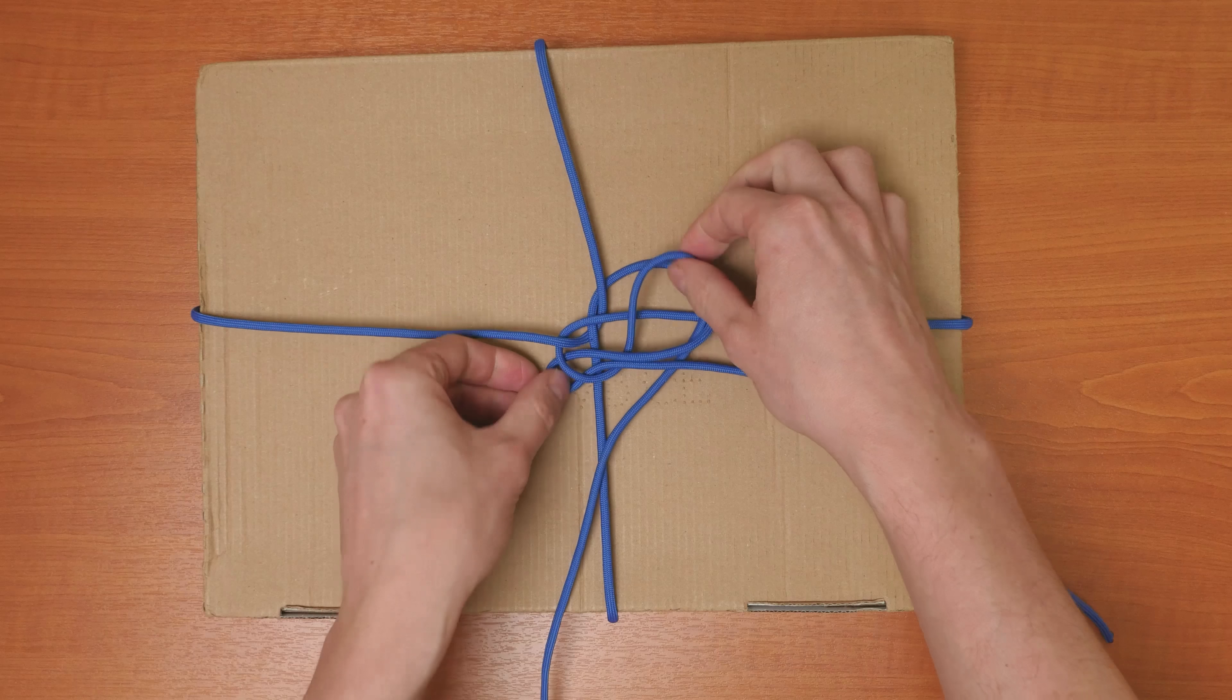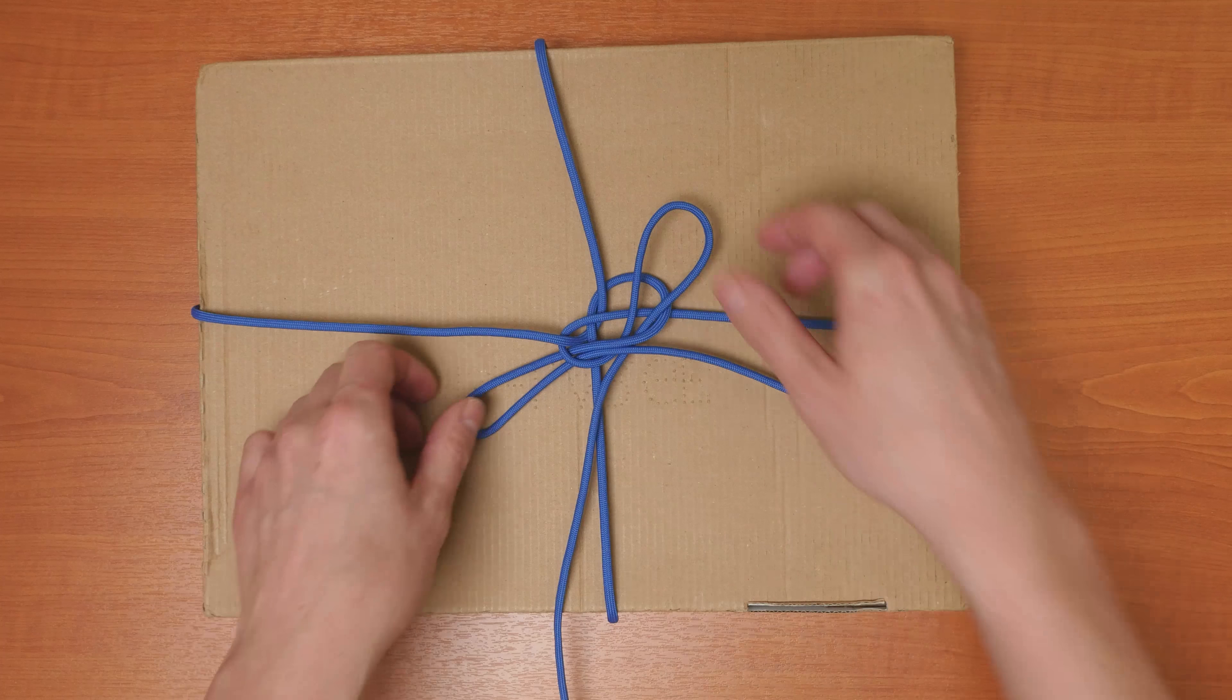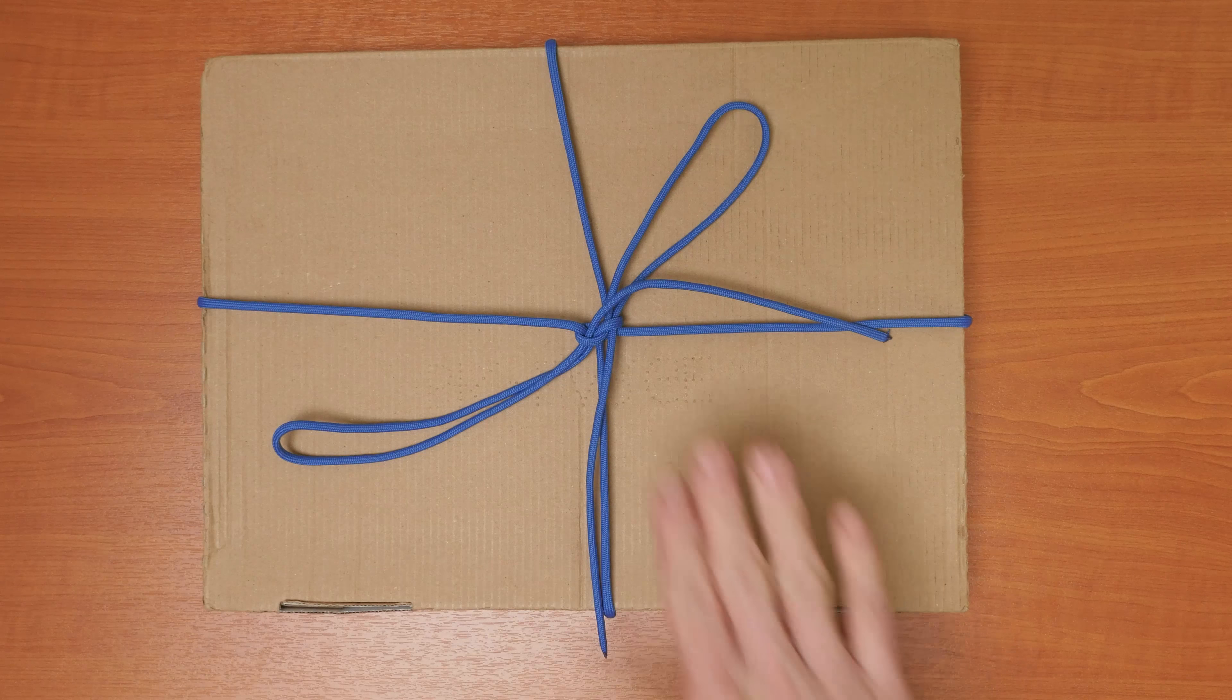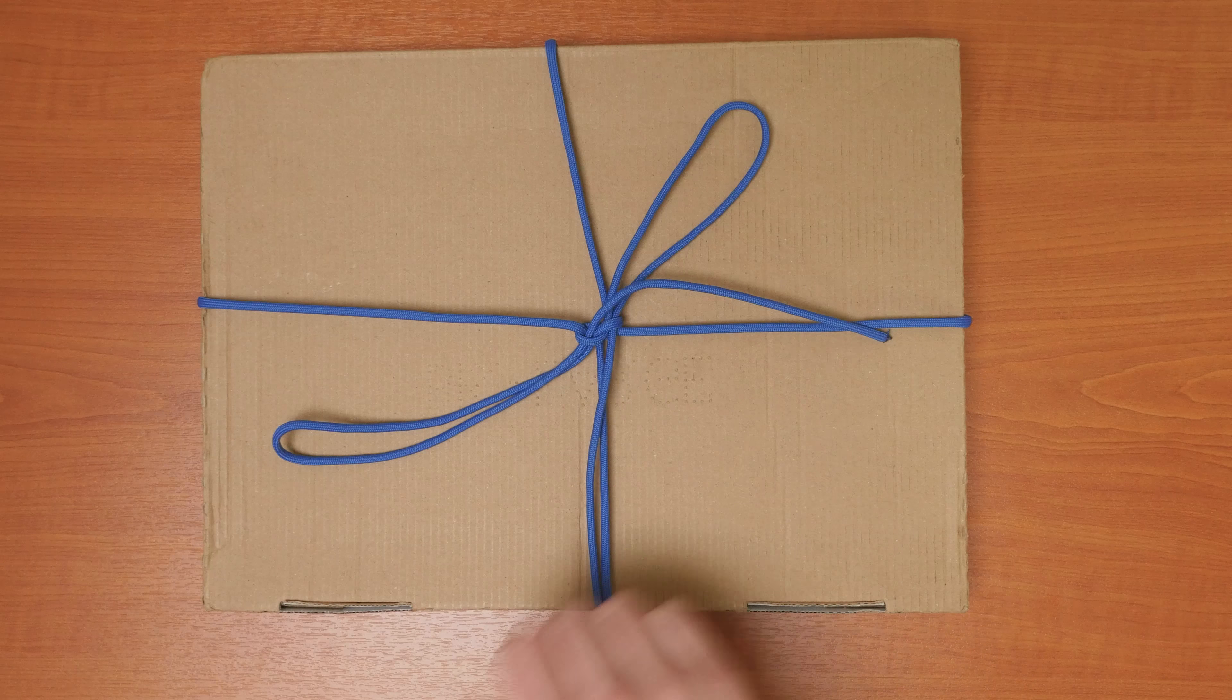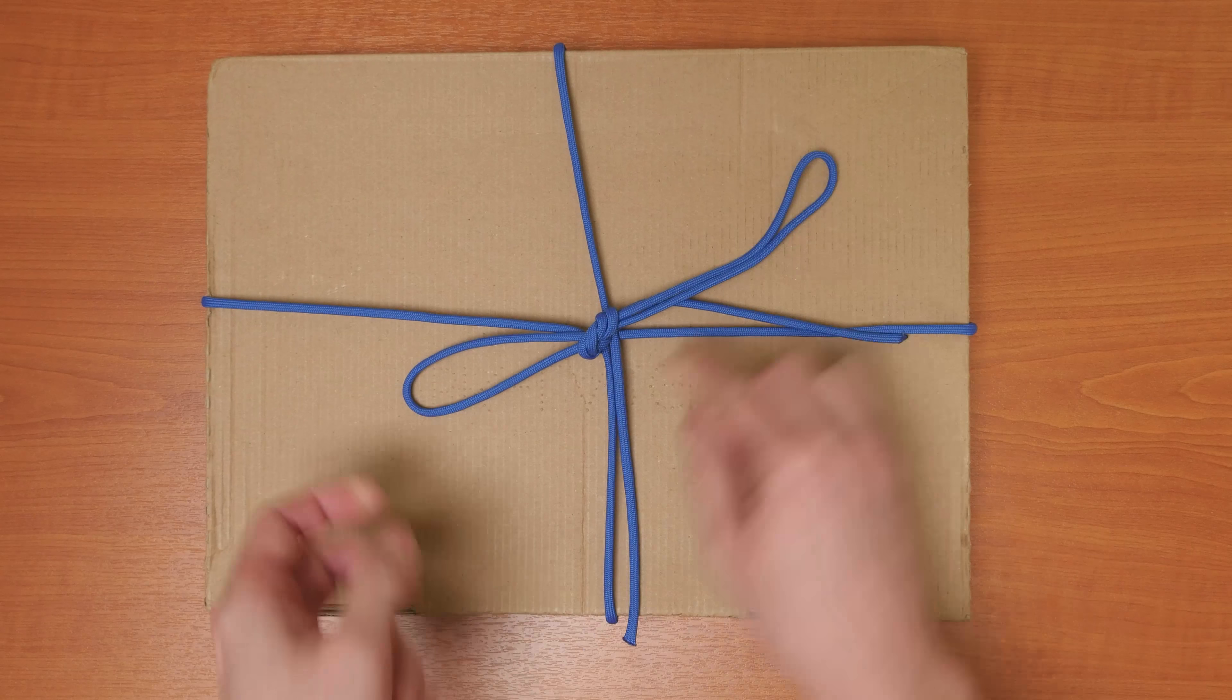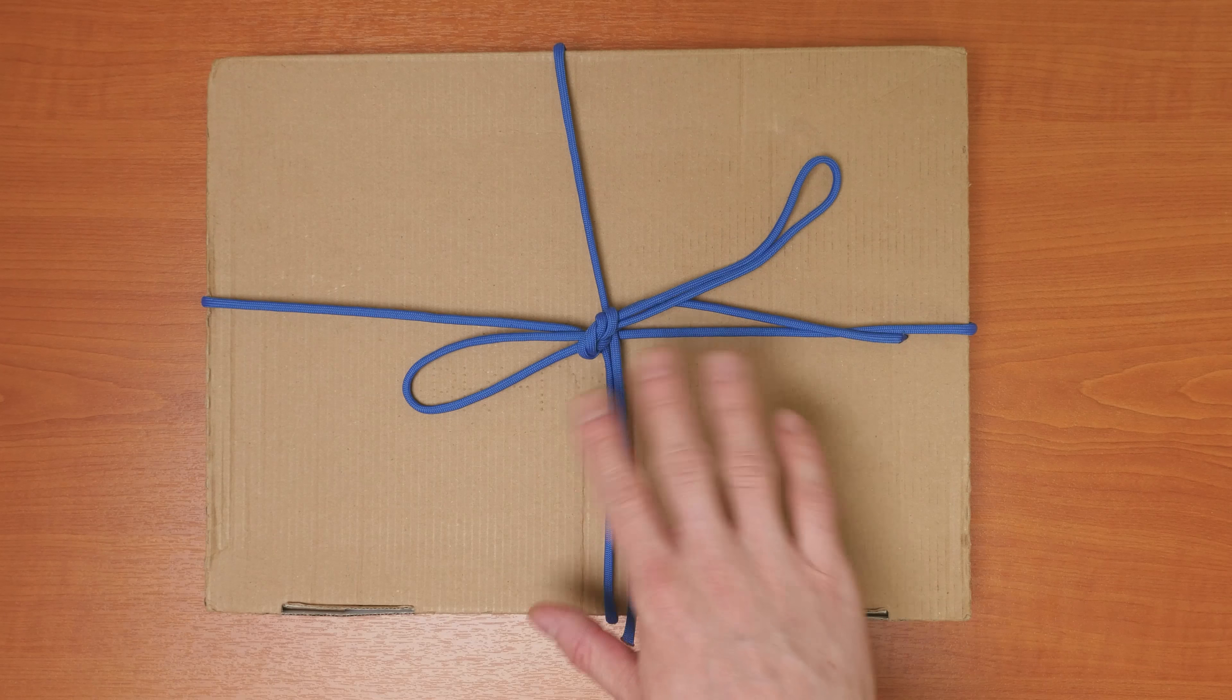Like this. So this is what you should get. Tighten up and your lashing is complete. Now with twine this is perfectly enough, but for slippery ropes, for example artificial ones such as paracord, you may want to do a second bow. Simply make a second bow like you would on your shoes, just to reinforce the bow in case you have a slippery kind of rope.